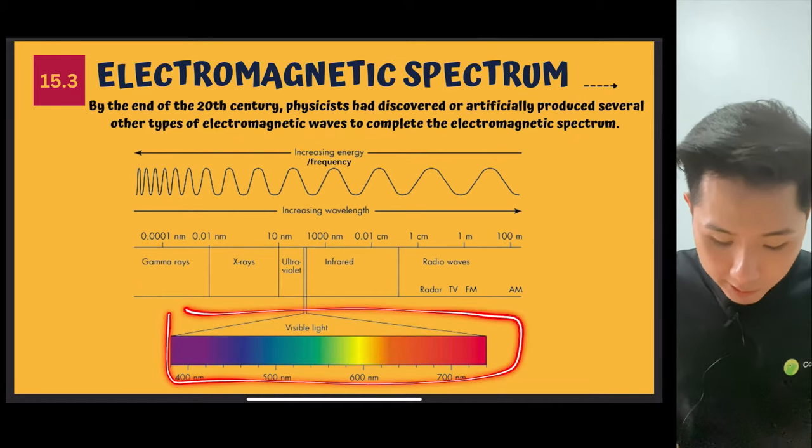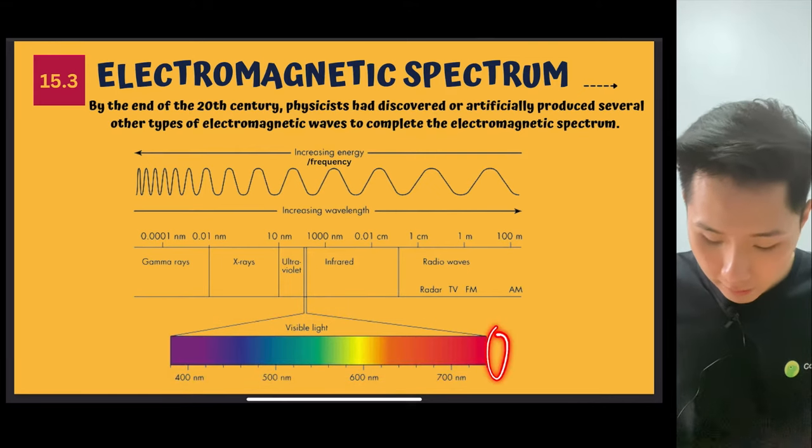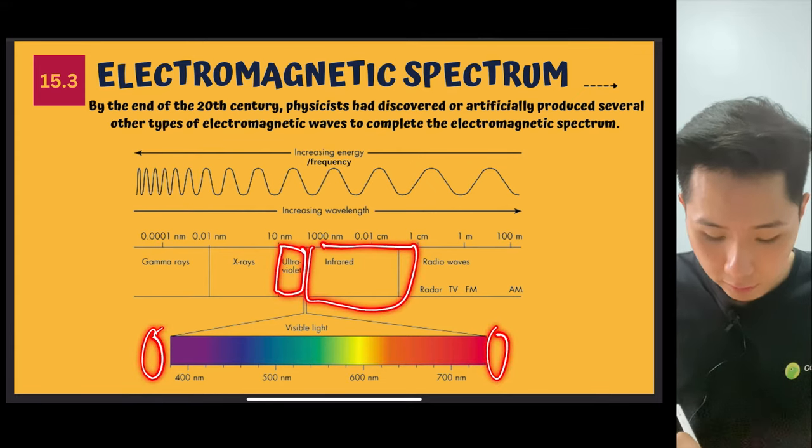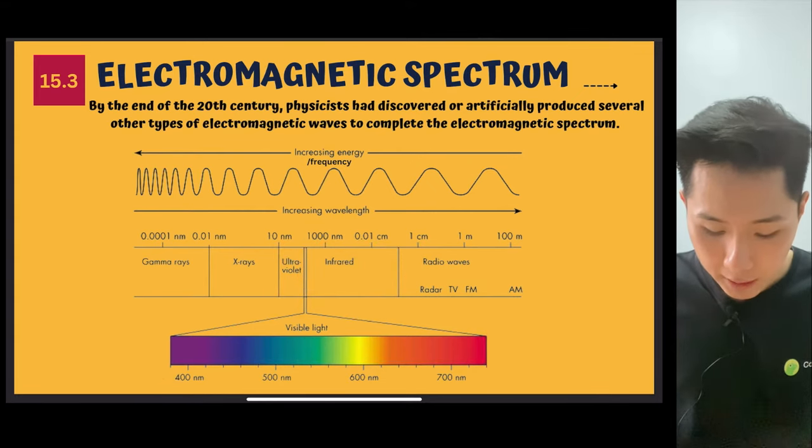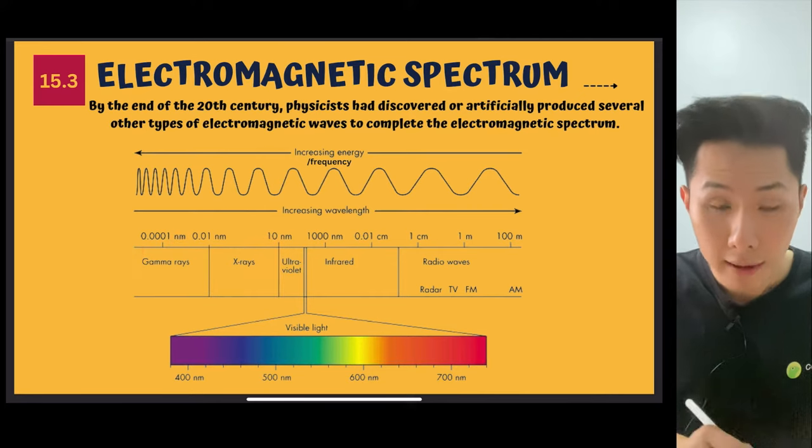We have our visible light, meaning light is also an electromagnetic wave. And both William Herschel and also Johan Ritter, they discovered ultraviolet and infrared, which is at the right and left. So these are the other waves, like radio wave, microwave, X-ray, gamma ray. They are also in the electromagnetic spectrum.